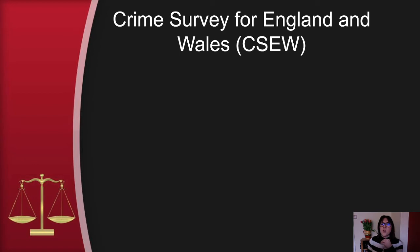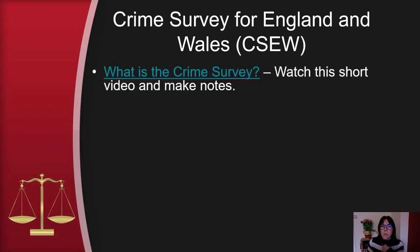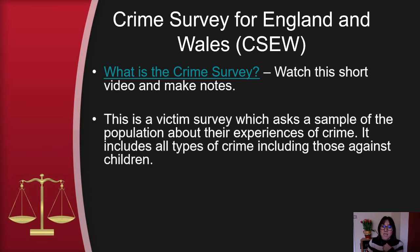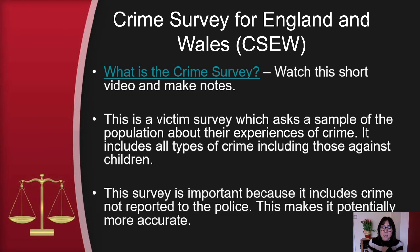Second half: the Crime Survey for England and Wales — the CSEW. What is the Crime Survey? It is the victim survey, which asks a sample of the population about their experiences of crime. It includes all types of crime, including those against children. This survey is important because it includes crime not reported to the police, which makes it potentially more accurate.